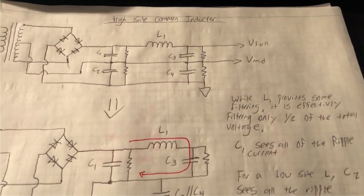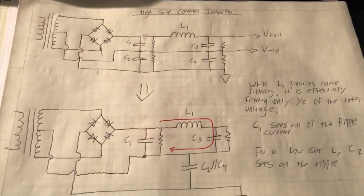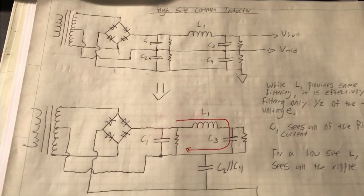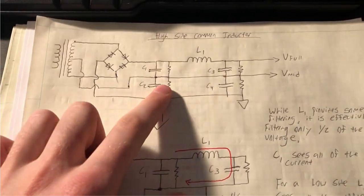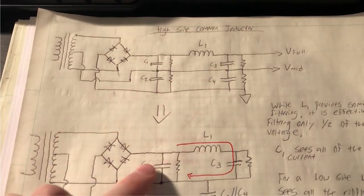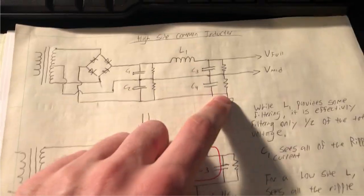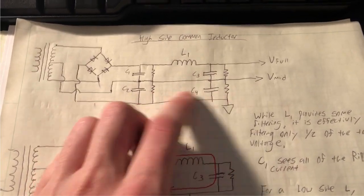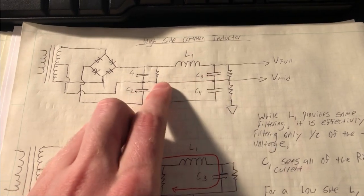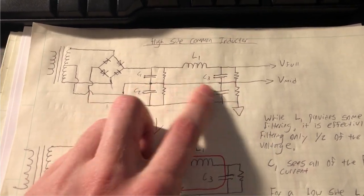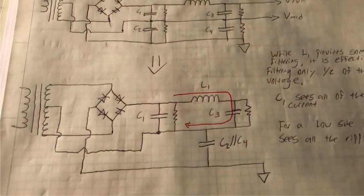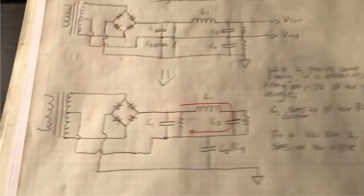However, after some further analysis, and again with help of the SPICE tools, this doesn't really work as we expect. And basically, if I take this circuit and redraw it, C2 and C4 here end up being in parallel with each other. This net has to be all the same voltage, right? It's a wire. So we end up getting something that actually looks like this from a filtering perspective.